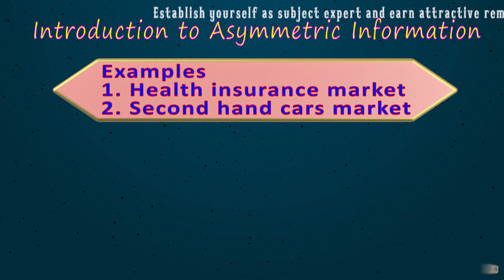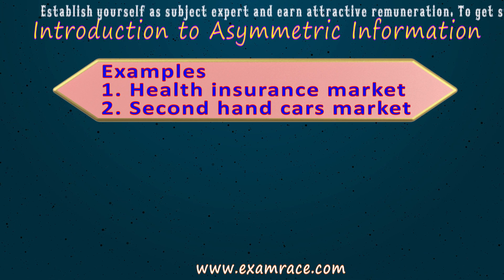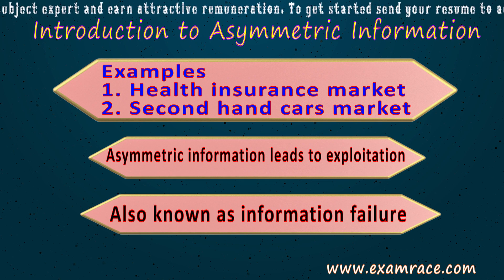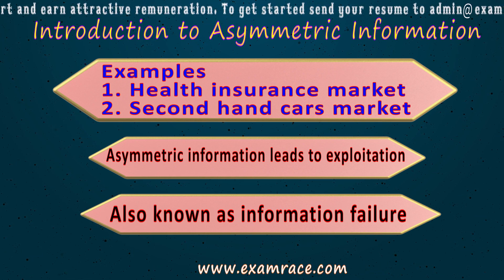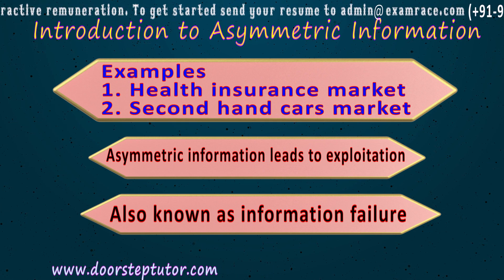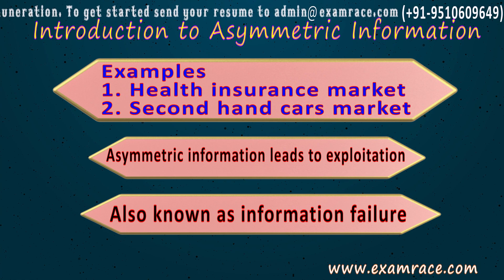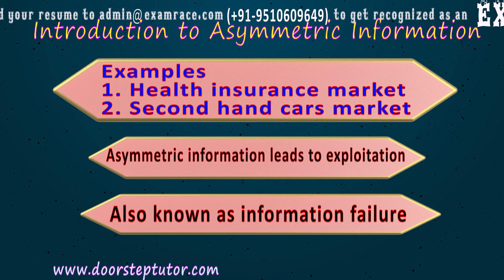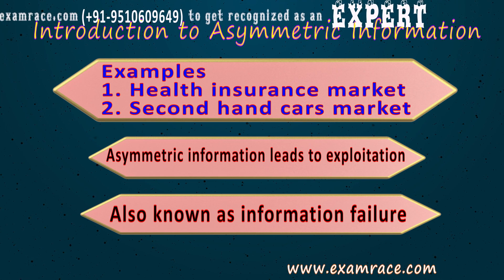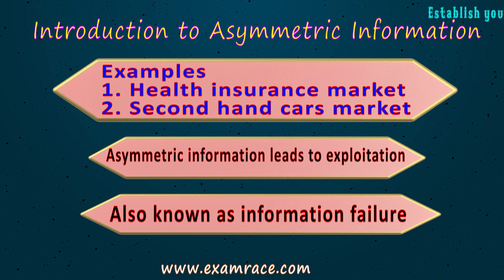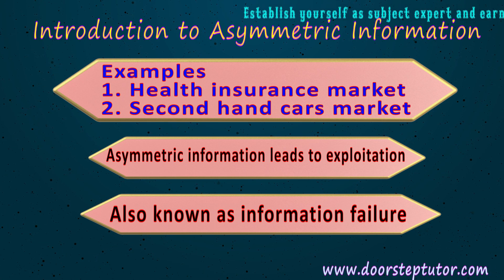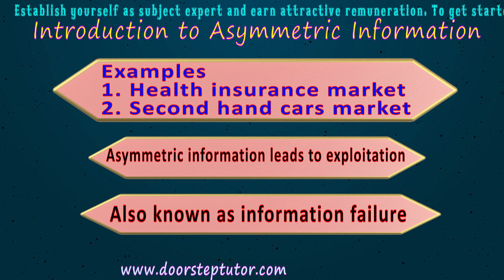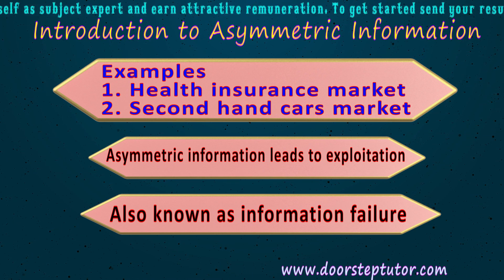For example, suppliers may have better information about the quality of a product than the buyers, which leads to sellers exploiting uninformed or under-informed buyers. Another popular example is the market for second-hand cars, where sellers have full information about the true quality of the car but the buyer is not aware. Similarly, a job applicant may not fully disclose skills they lack that are required for the job. These are all examples of asymmetric information.